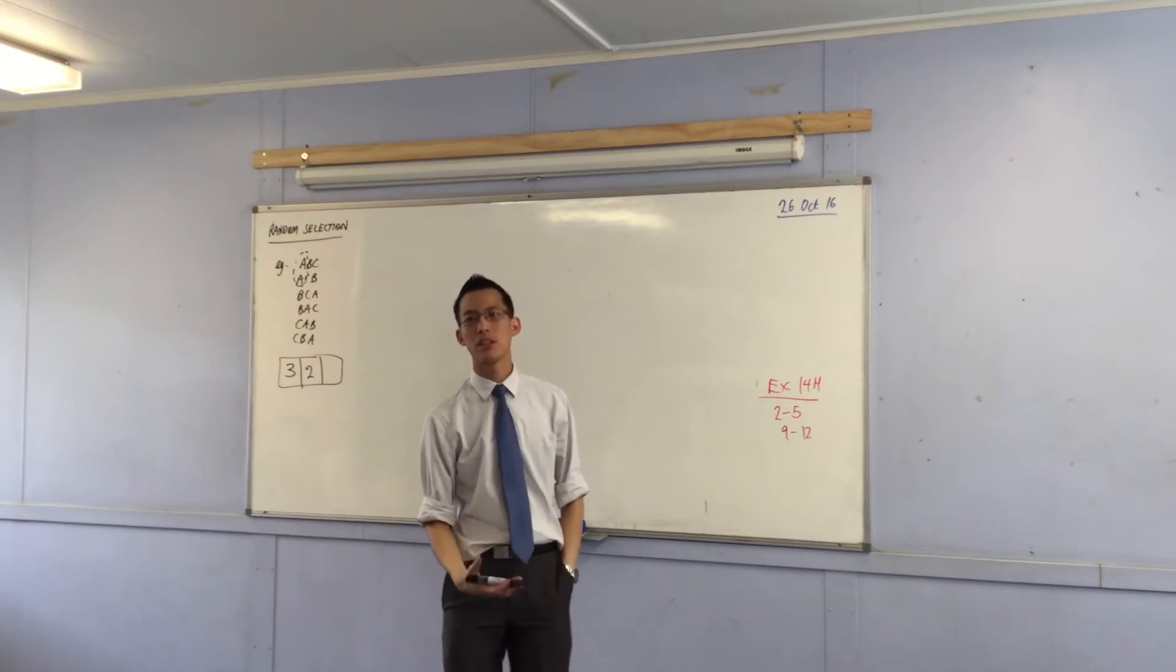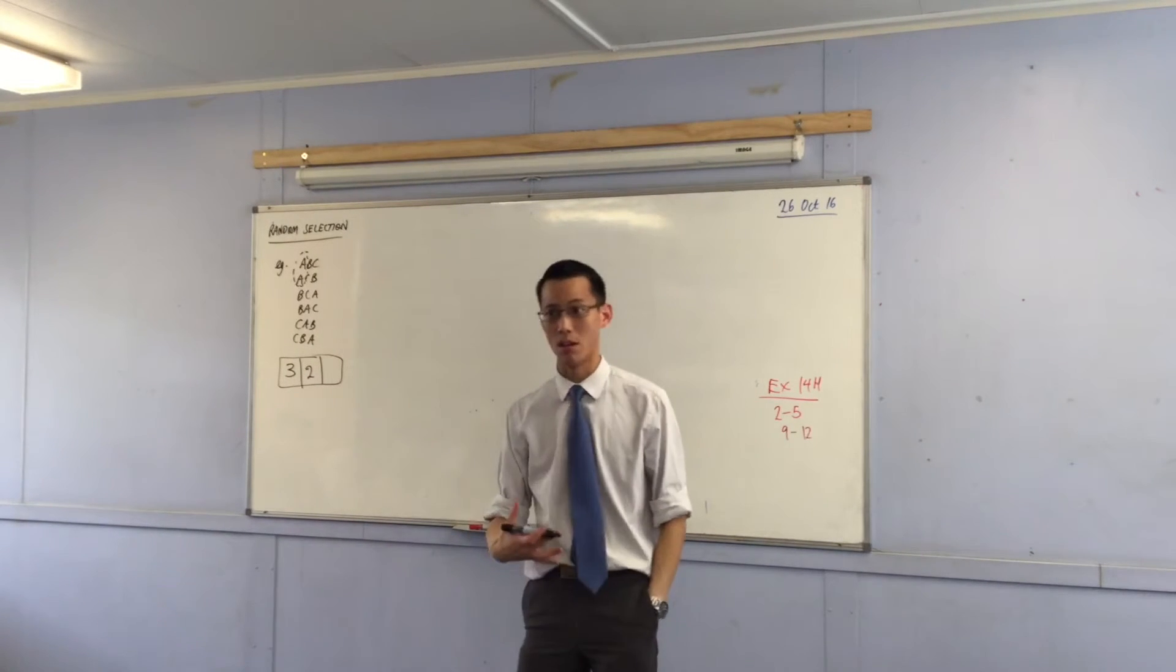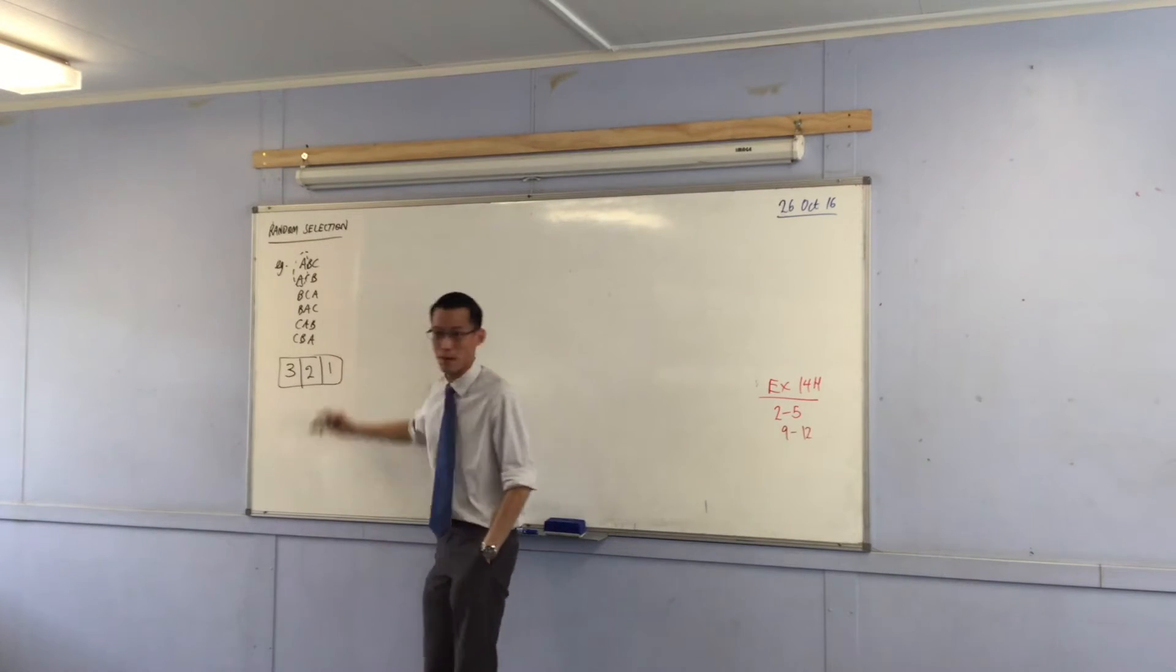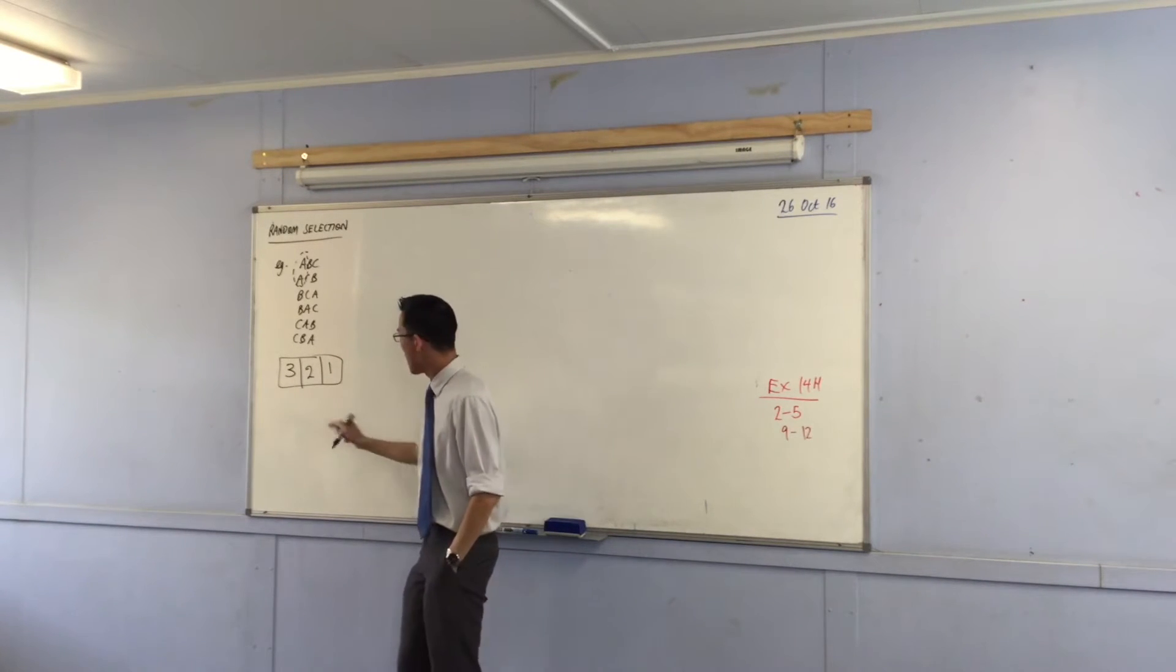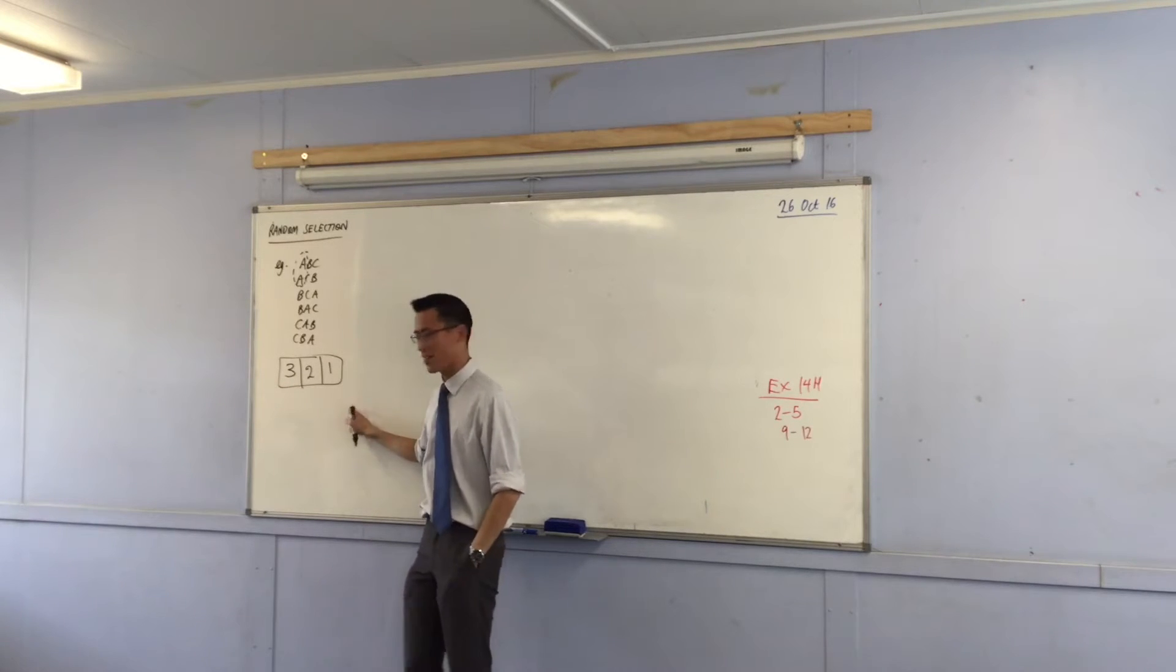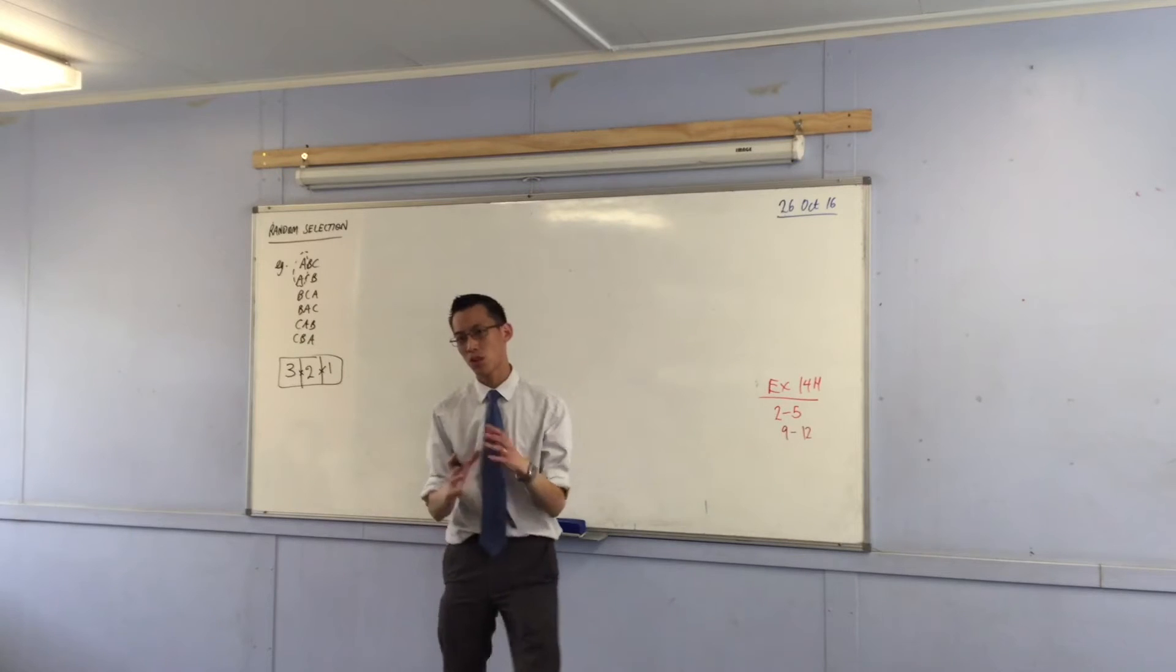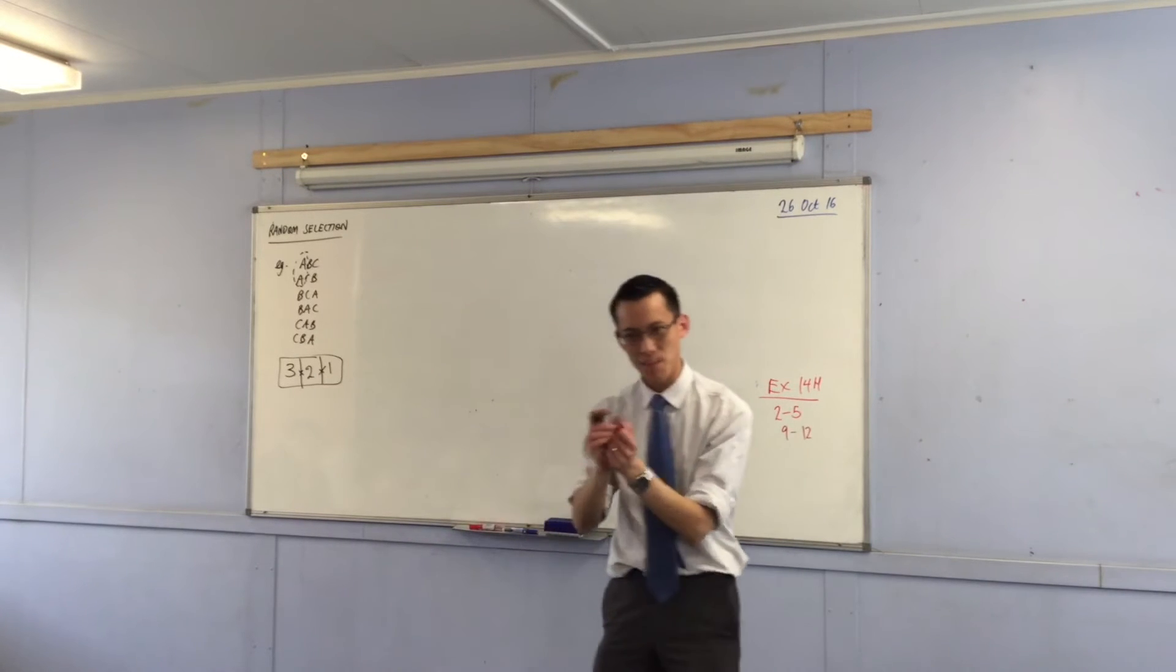But once you've chosen those first two songs, there's only one left. Right? So there's only the last remaining one, and that's it. Now, what do you do with each of these numbers? We're going to multiply them. Because what you're creating is like this probability tree.